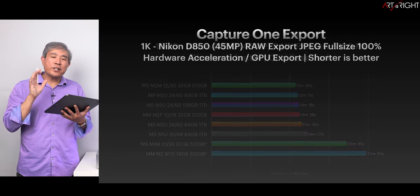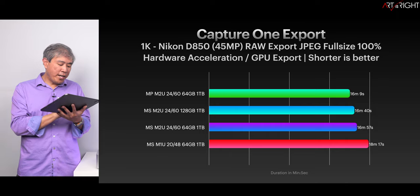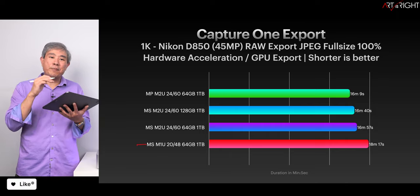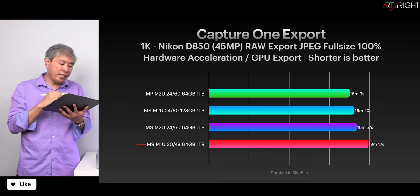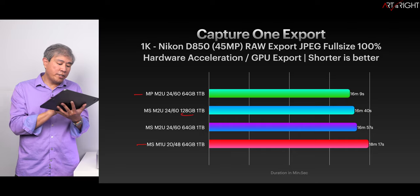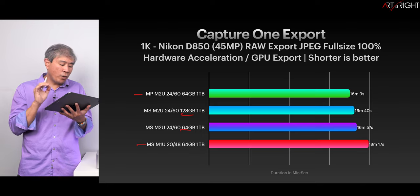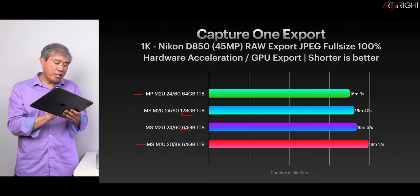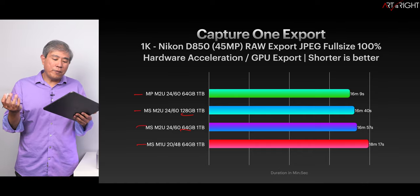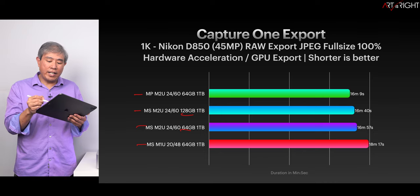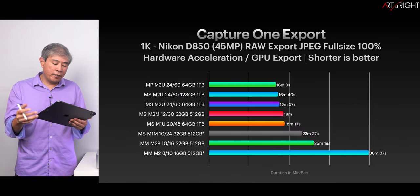When it comes to Capture One export, the M1 Ultra Mac Studio offers probably one of the best value per price points in this group. The Mac Pro does pull ahead of all the other machines, with the 128 gigabyte model slightly behind and then the 64 gigabyte M2 Ultra. But the performance delta between the Mac Pro and the Mac Studio is really small at best — I don't think this is offering any meaningful performance improvement.